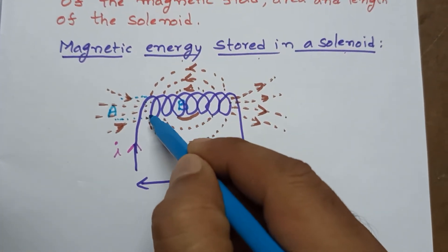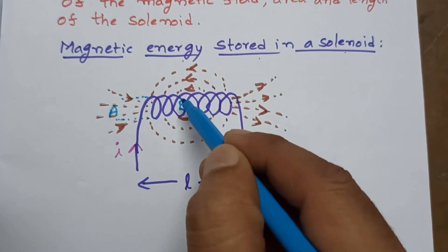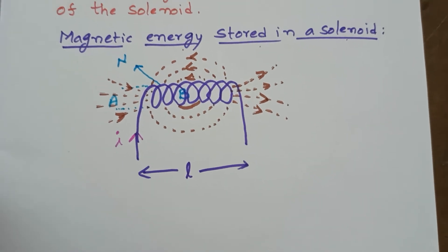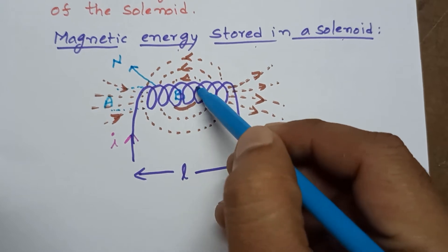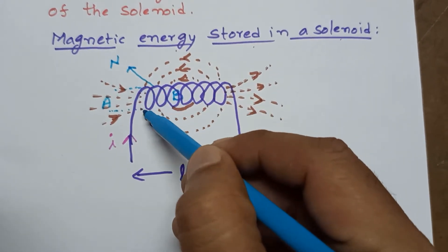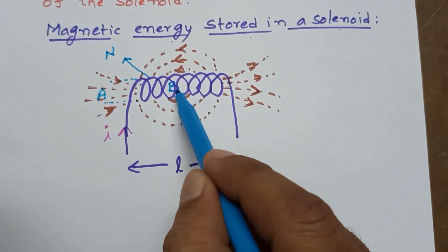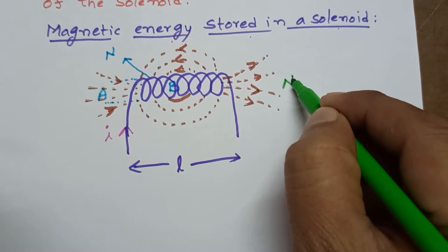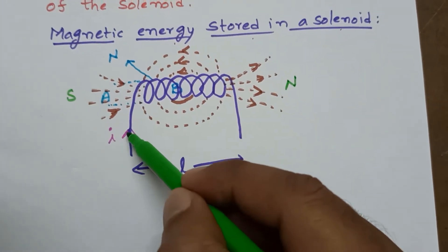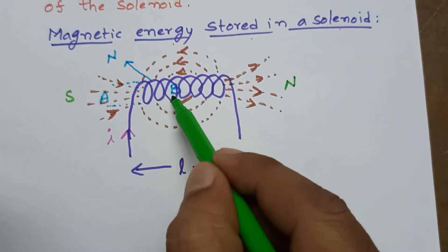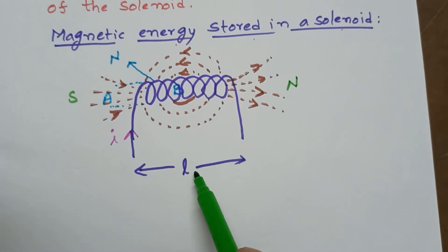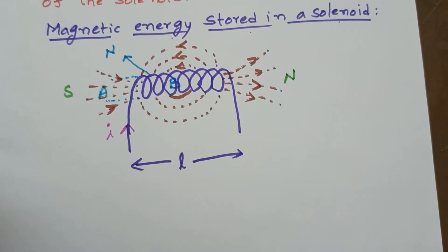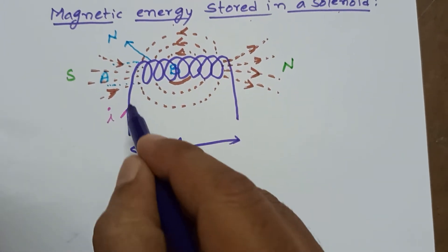There may be one turn, two turns, three turns — N turns present in the solenoid. When current passes through this coil, magnetic field B is created. This is the north pole and this is the south pole. The length of the coil is L, area is A, having N turns.